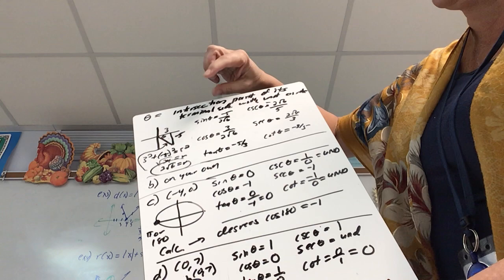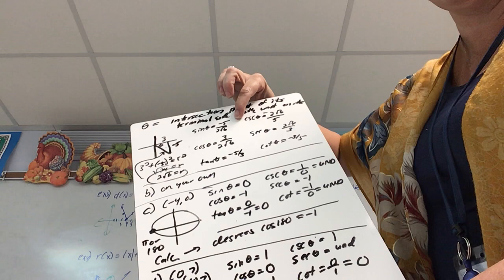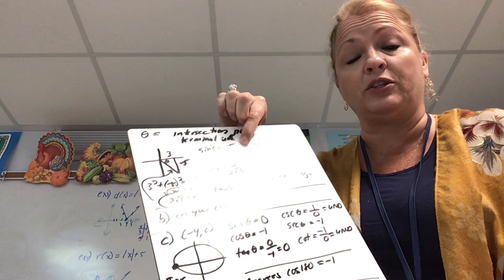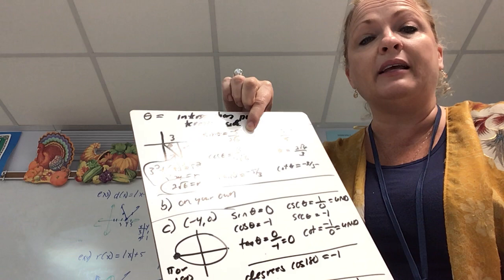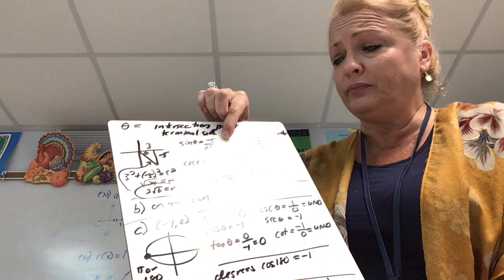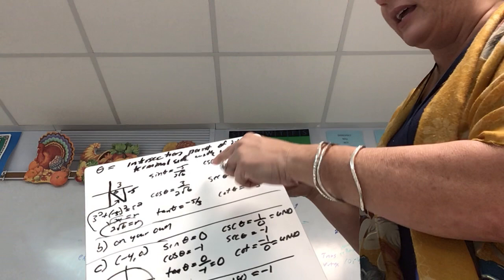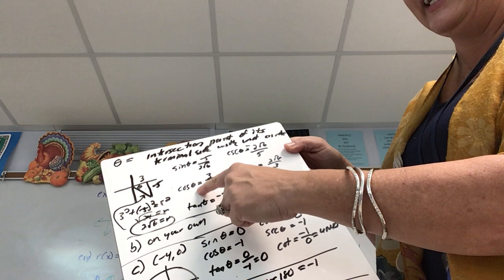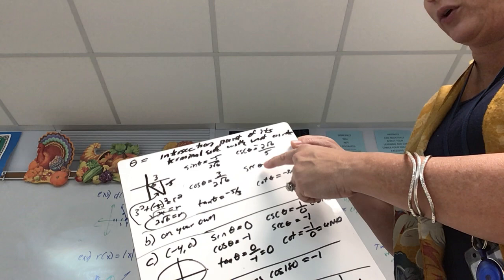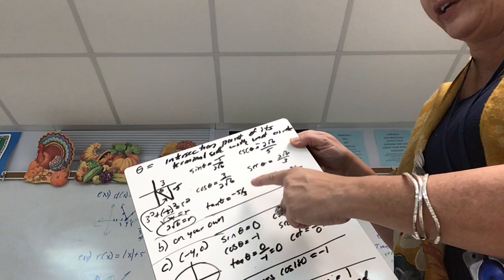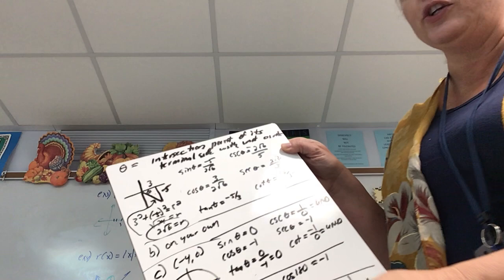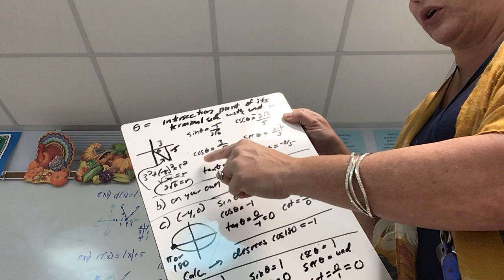Setting up the trig ratios for the point (3, -5) with hypotenuse 2√6: sine = -5/(2√6); note that in trig we don't rationalize, so we can clearly see the opposite side and hypotenuse. Cosecant is the reciprocal: -2√6/5. Cosine = 3/(2√6), secant = 2√6/3. Tangent is opposite over adjacent = -5/3, and cotangent = -3/5. Notice the angle is in quadrant four, and only cosine and its partner secant are positive.